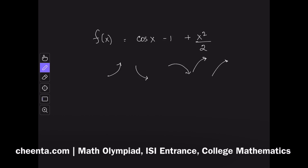Let's look at this function f(x) = cos(x) - 1 + x²/2. We want to know if the function is increasing, is it decreasing, or is it sometimes decreasing and then increasing, or maybe increasing and then decreasing. This is the general question.